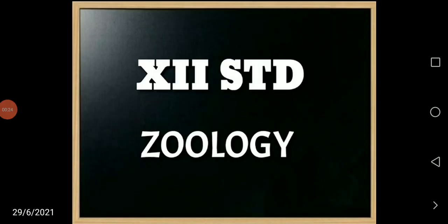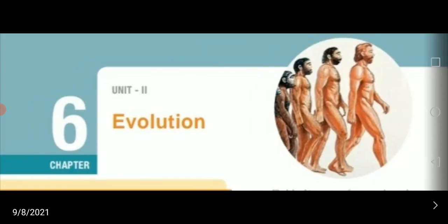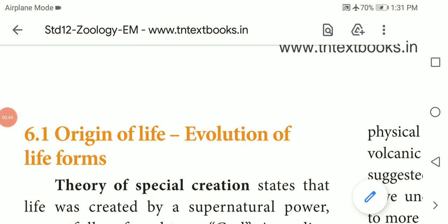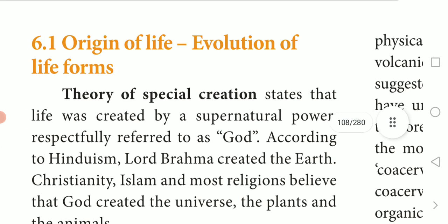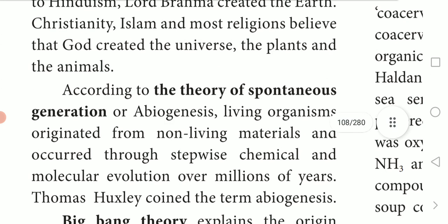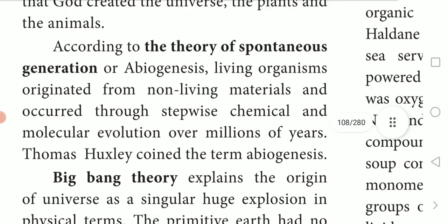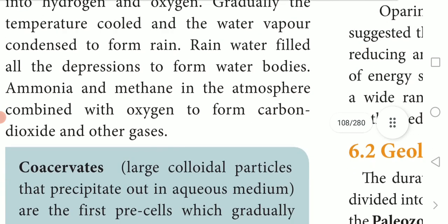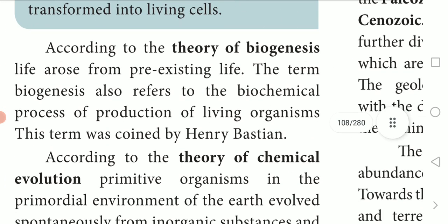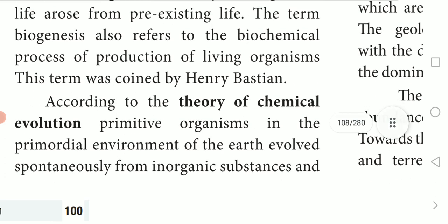Yes students, this is 12th zoology class, chapter 6 part 2 - Evolution. In the last video class we have seen the origin of life: theory of special creation, theory of spontaneous generation, big bang theory, co-cервates, and biogenesis. The next topic we are going to see is the theory of chemical evolution.